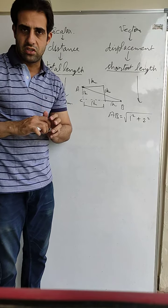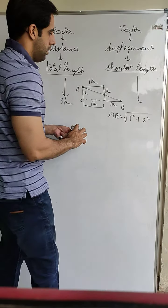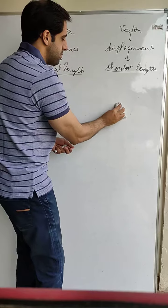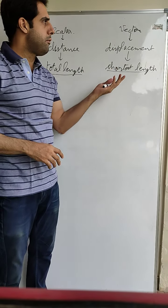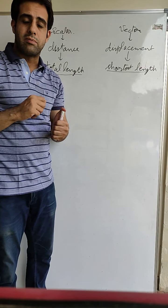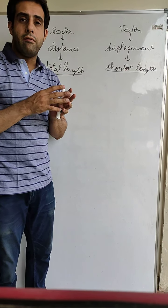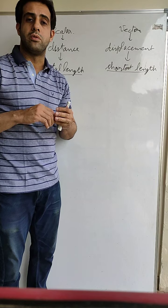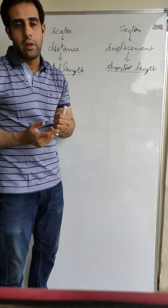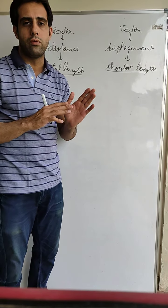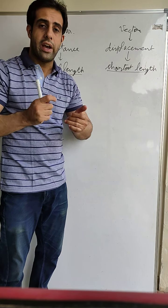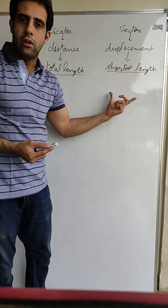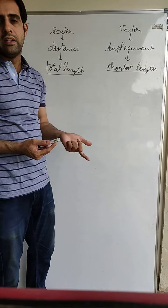So I hope the differentiation between distance and displacement is clear. Now, why do we put displacement in the vector quantity category? Displacement is a vector quantity because when we are moving in a curved path or a randomly turning path, the direction in which we are moving becomes very important. If I am going towards north and suddenly move towards east, my displacement changes. So direction becomes essential when calculating displacement — hence displacement is a vector quantity and distance is a scalar quantity.